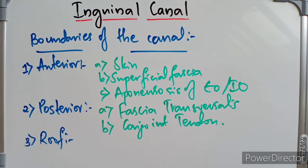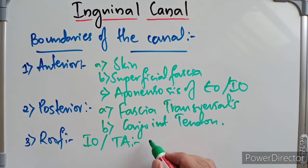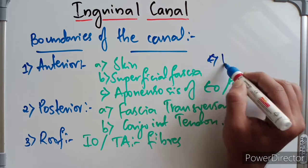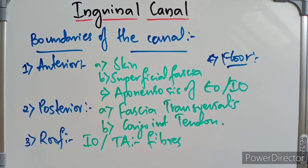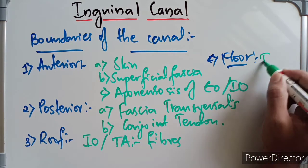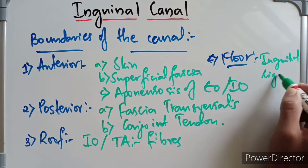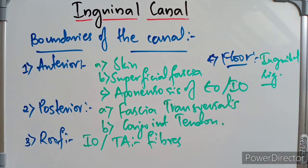The roof is formed by the lower arched fibers of the internal oblique and the transversus abdominis. The floor of the inguinal canal is formed by the upper surface of the inguinal ligament.